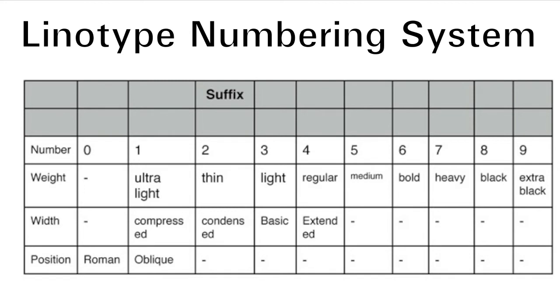Univers was revised in 1997 as the Linotype numbering system was created. In Linotype Univers font family, a three number system is used. The first letter describes font weight, the second letter describes font width, and the third letter describes font position. With this system, ultralight, extended heavy, and monospace versions of the font were created.